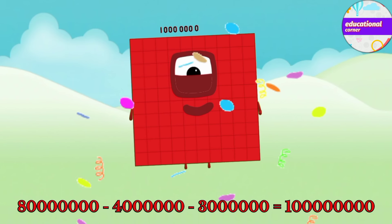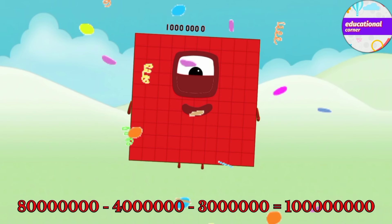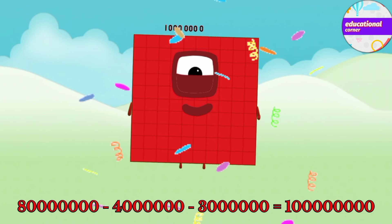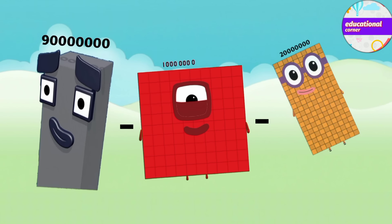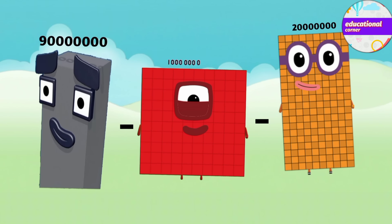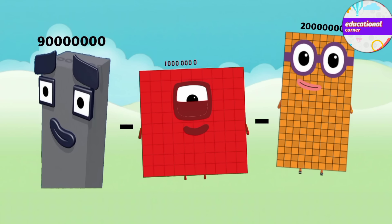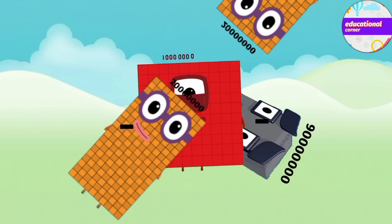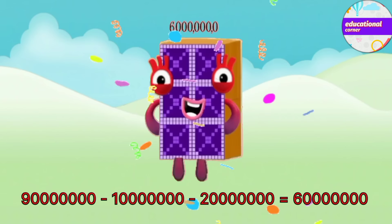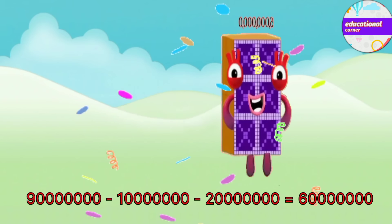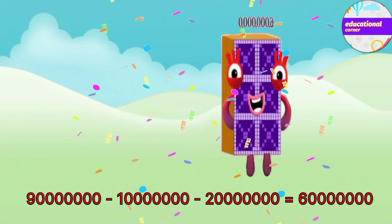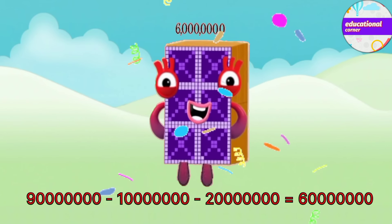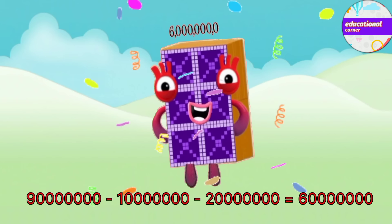Ten million. Ninety million minus ten million minus twenty million equals sixty million.